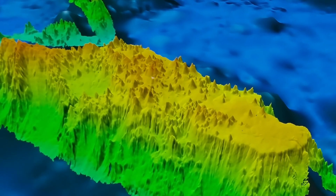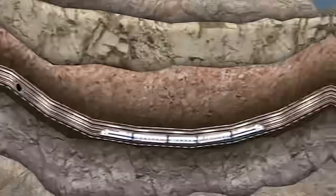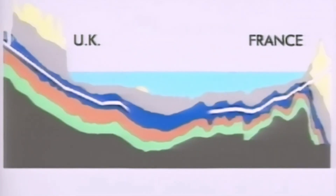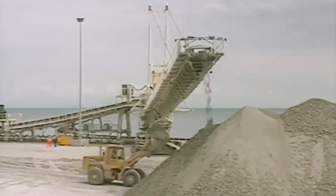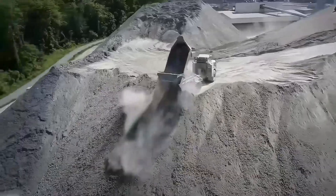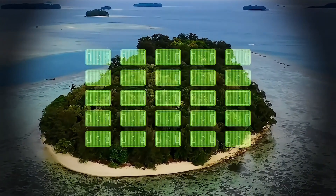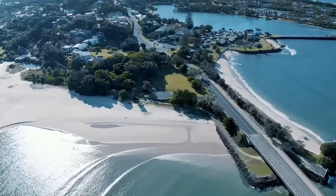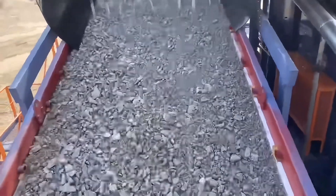An outstanding example of modern engineering capability is the English Channel, where underwater tunnels almost 40 kilometers long have been built, representing one of the most impressive works of recent decades. The volume of material excavated during tunnel drilling can be staggering — the 10 kilometers of crushed rock resulting from excavation could be enough to create an island housing up to 50 football stadiums. This surplus material is not wasted, but is used strategically for backfilling and widening the shorelines of nearby cities, essential for both economic viability and minimizing environmental impact.